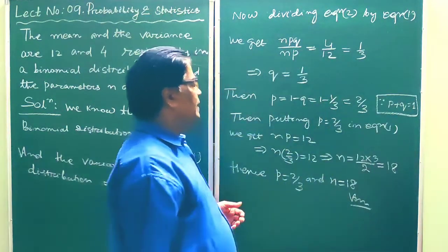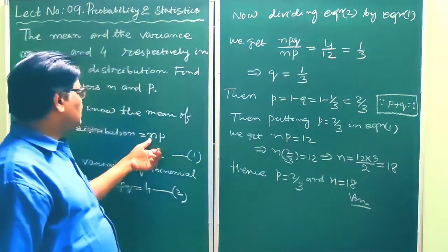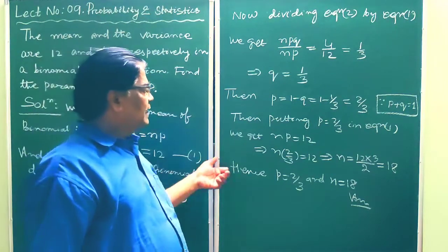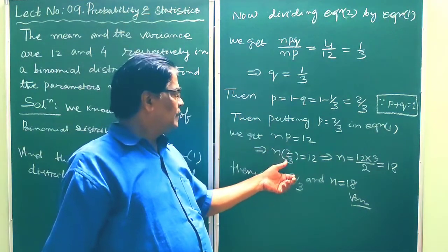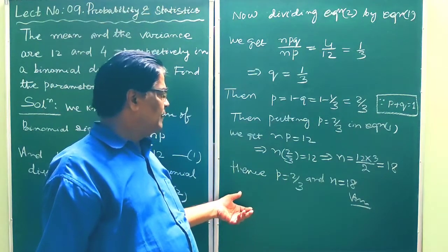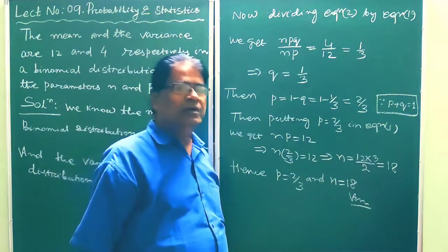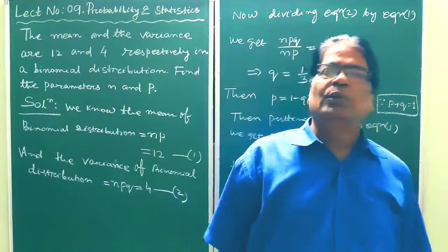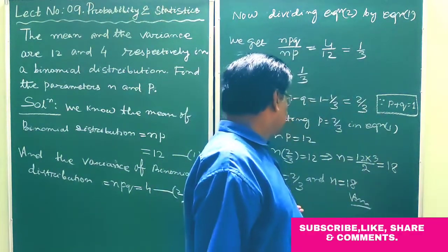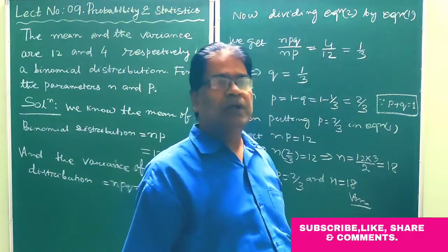Now putting p equal to 2 by 3 in equation 1, np is equal to 12, putting the value p equal to 2 by 3, and after simplification we get n is equal to 18. So the values of the parameters are p equal to 2 by 3 and n equal to 18.